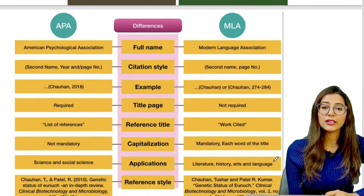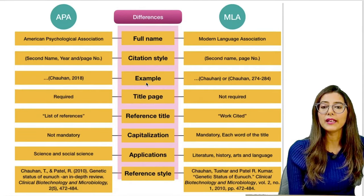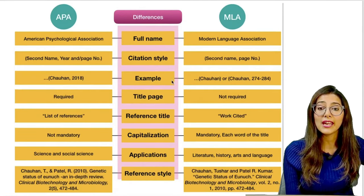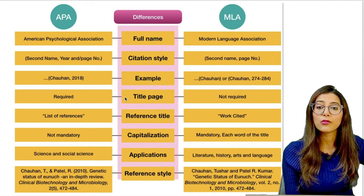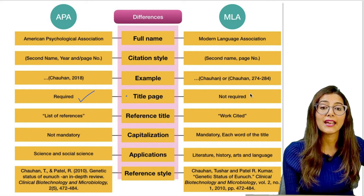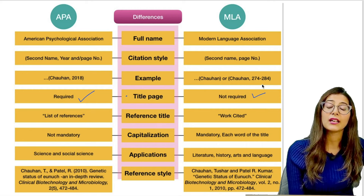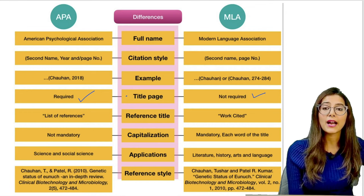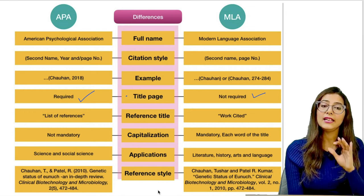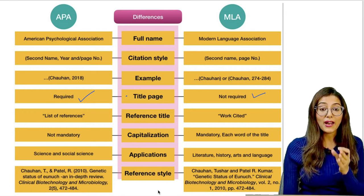One more thing: in APA, a title page is required; but in MLA, a title page is not required. Take a screenshot of the comparison table and read it carefully.